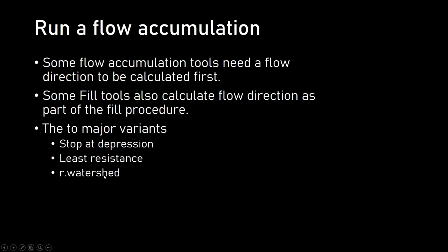The tool I'll be using is r.watershed, and that doesn't need you to calculate the flow direction first — it's calculated as part of the procedure. There's also the question of how water models behave: we can have those that stop at depressions, and we can have those that find the path of least resistance. r.watershed can do sort of both things; it's a relatively complex piece of software.